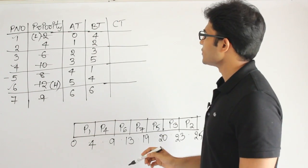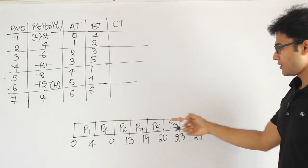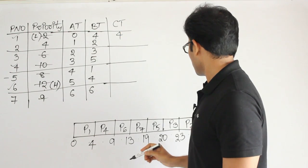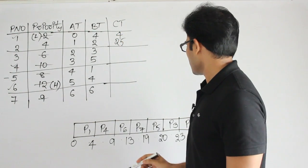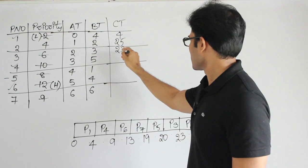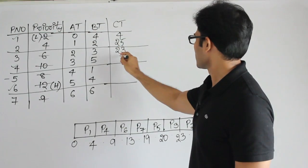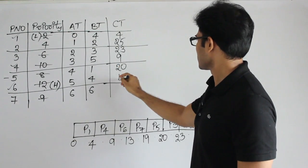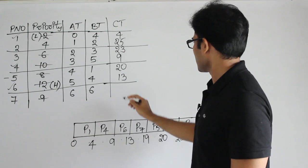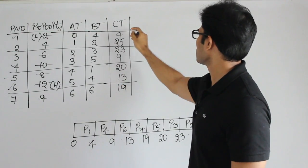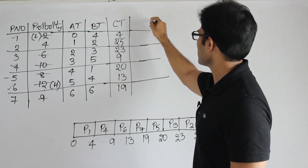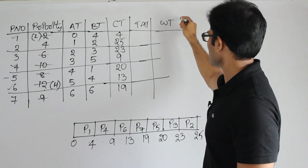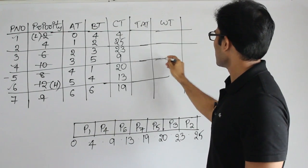The completion time of each process: P1 is 4, P2 is 25, P3 is 23, P4 is 9, P5 is 20, P6 is 13, and P7 is 19. From these completion times we can obtain the turnaround time, waiting time, and also the response time.